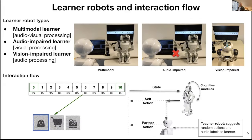In our setup, we employed three types of learner robots. The first one is the multimodal learner, which can process audio and visual data as it is. The second one is the audio-impaired learner robot, which perceives visual data from the environment as it is, but processes noisy audio data. The third one is the vision-impaired robot, which can perceive audio data as it is, but processes noisy visual data.